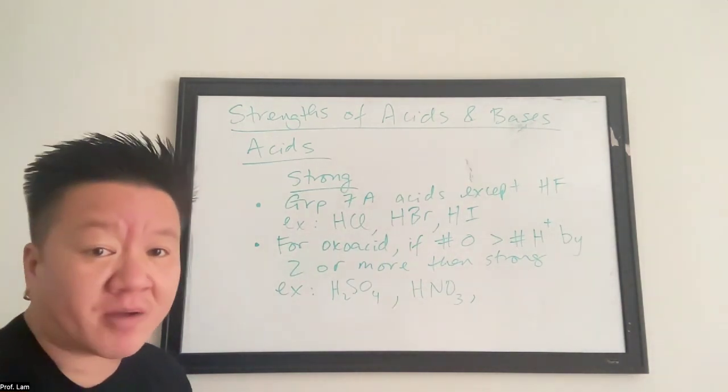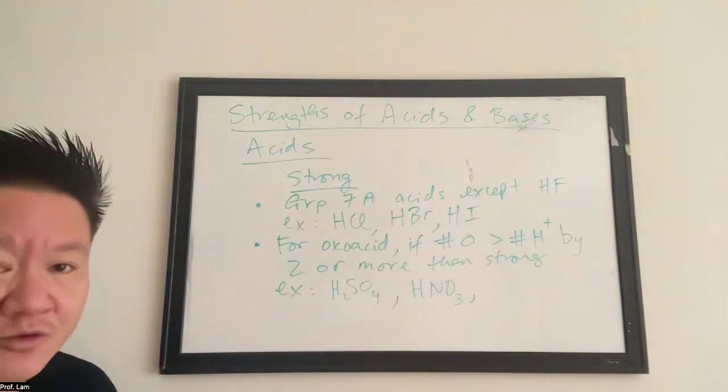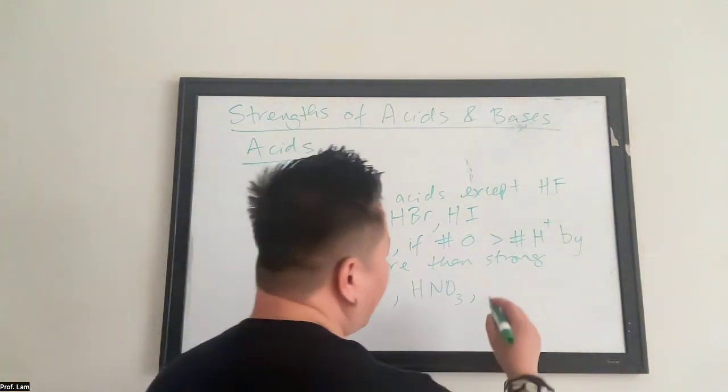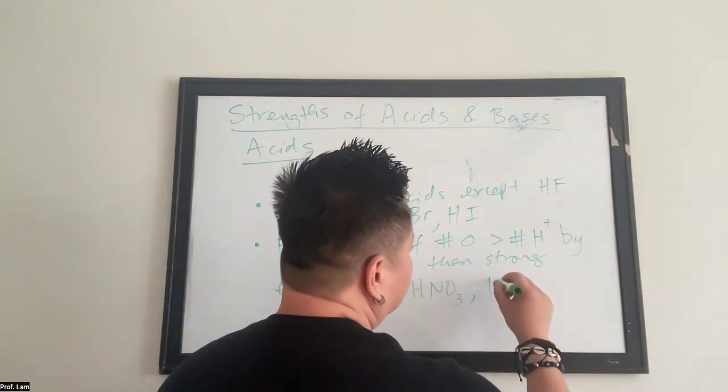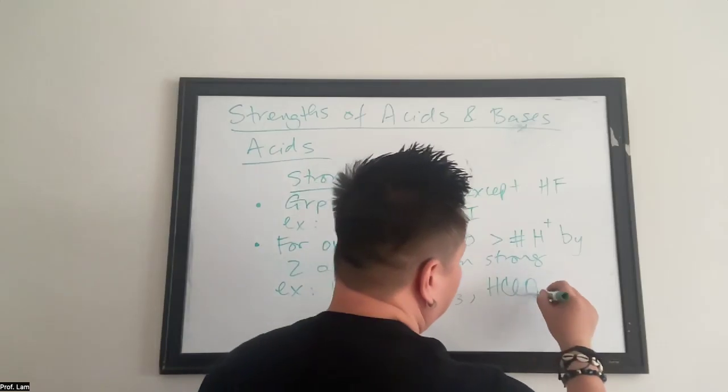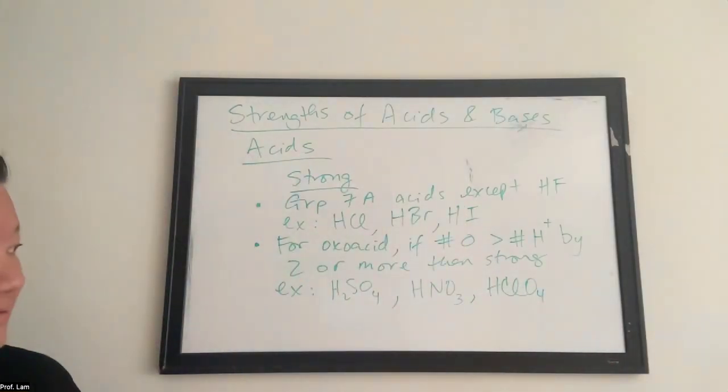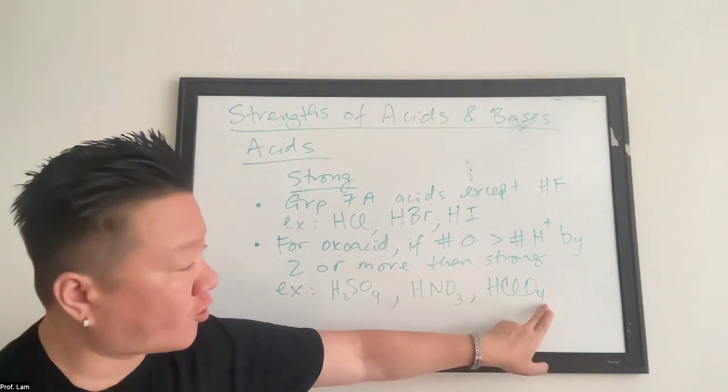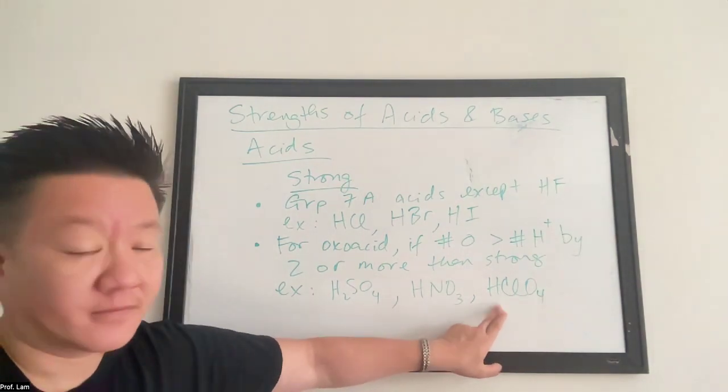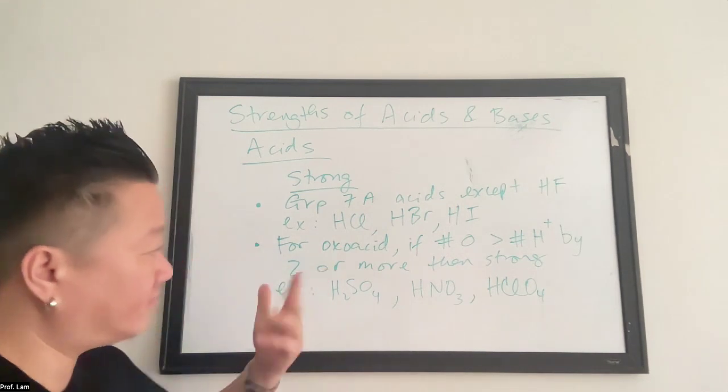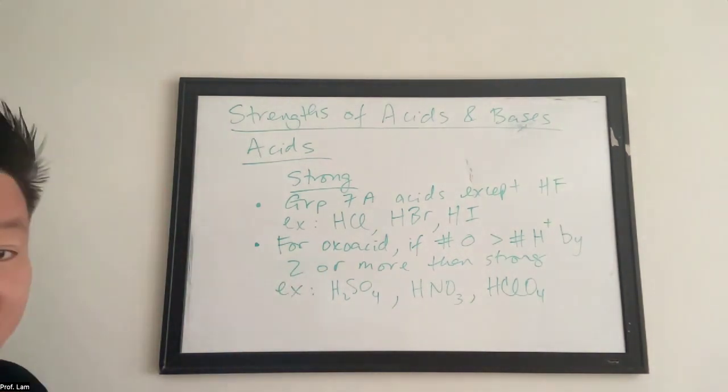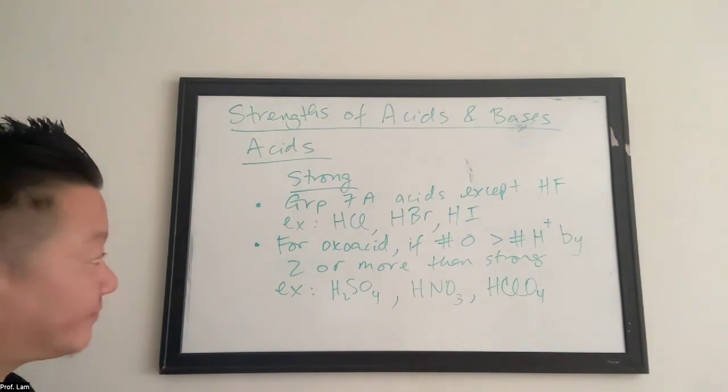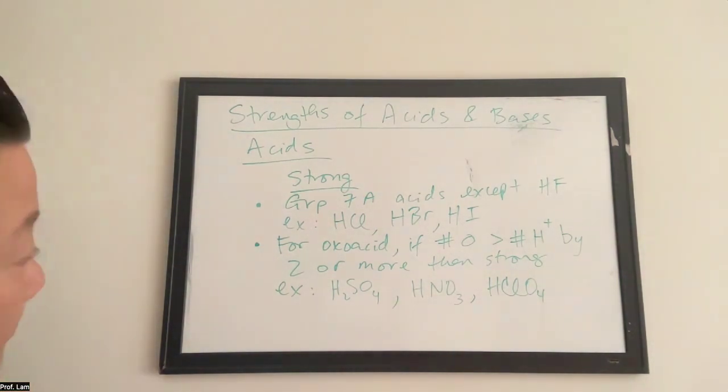So quite easy to see, right? You don't have to memorize this. Just follow these quick tips. HClO4. That belongs on the strong list. This is perchloric acid. Four minus one, it's three. So more than two, you're going to have a strong acid.